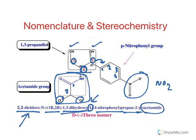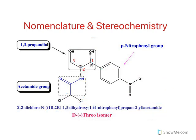The active isomer is the D-threo isomer — remember this is the only active isomer. The erythro isomer is inactive as an antibiotic.